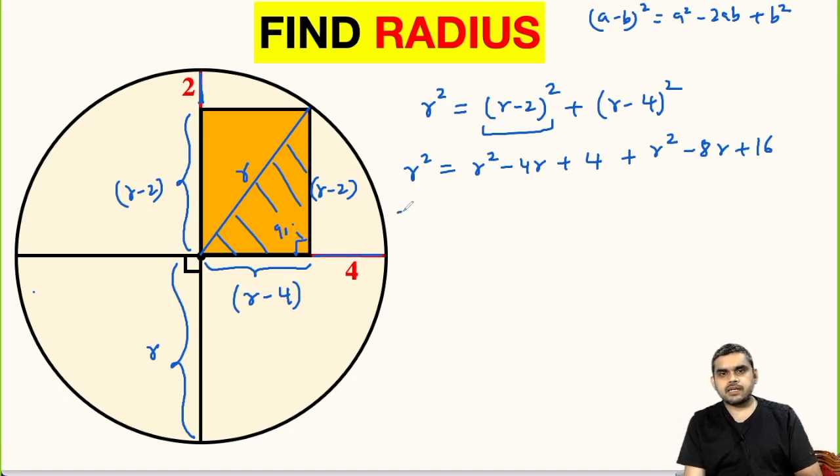This will be r square minus 4r plus 4, and likewise this will be r square minus 8r plus 16. We can subtract r square from both sides, so this will get cancelled and we will have 0 on LHS.